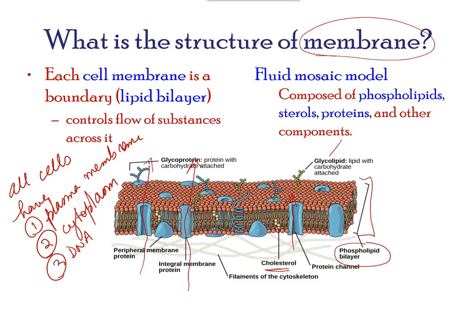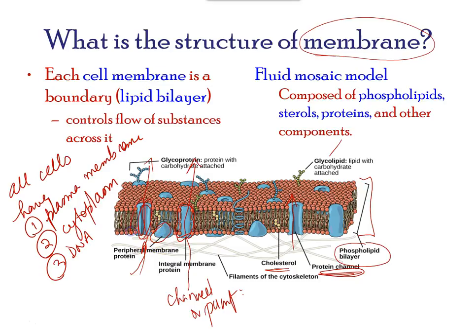Proteins make up the second major chemical component of a plasma membrane. Integral proteins are embedded in the plasma membrane and may span all or part of the membrane; they may serve as channels or pumps to move materials in and out of the cell. Peripheral proteins are found on the exterior or interior surface of the membrane, attached either to integral proteins or to phospholipid molecules. Both integral and peripheral proteins may serve as enzymes, as structural attachments for the fibers of the cytoskeleton, or as part of the cell's recognition site.